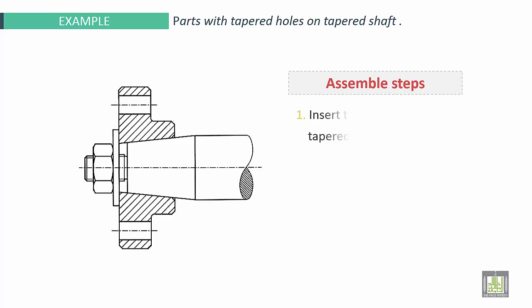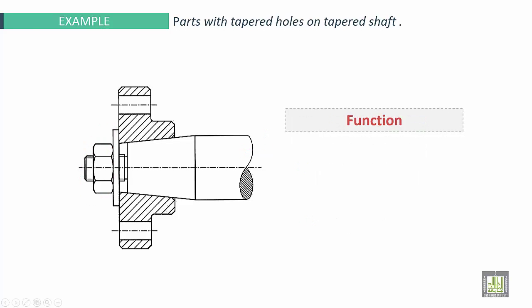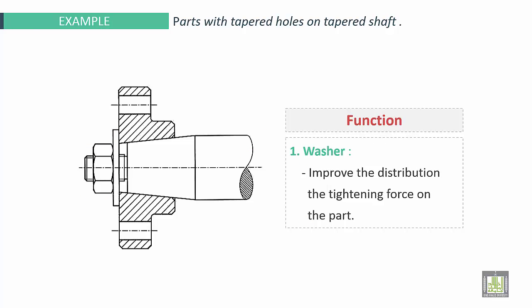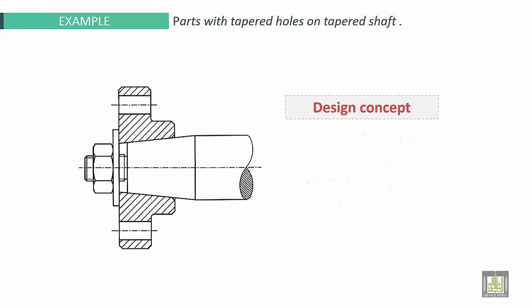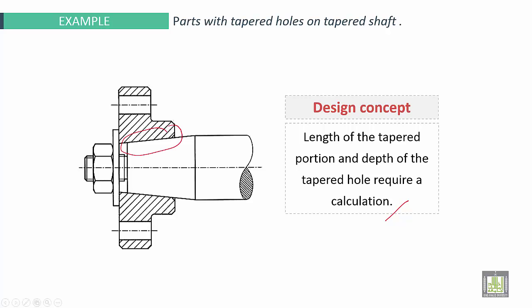Next example. The assembly steps are the following. First, insert the part on the tapered end of the shaft. Insert the washer, non-standard. This is the washer. Third, tightening the nut. And finish the assembly. Function: the washer improve the distribution, the tightening force on the part. Improve the distribution and make a uniform distribution of the tightening force. As a design concept, length of the tapered portion and depth of the tapered hole require a calculation here.